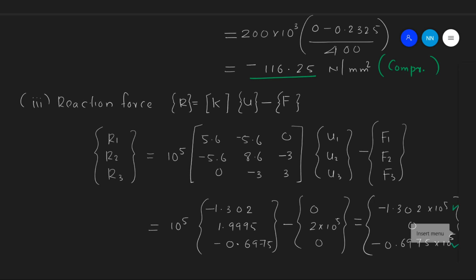These three values are the reactions at every node: reaction at node 1 is -1.302 × 10⁵ N, reaction at node 2 is 0, and reaction at node 3 is -0.6975 × 10⁵ N. The reaction force should be equal in magnitude and opposite in direction to the applied force. The applied force was 200 kN = 2 × 10⁵ N, and the total reaction force is (-1.302 × 10⁵) + (-0.6975 × 10⁵) = -2 × 10⁵ N, confirming the total reaction force is equal and opposite to the applied force.